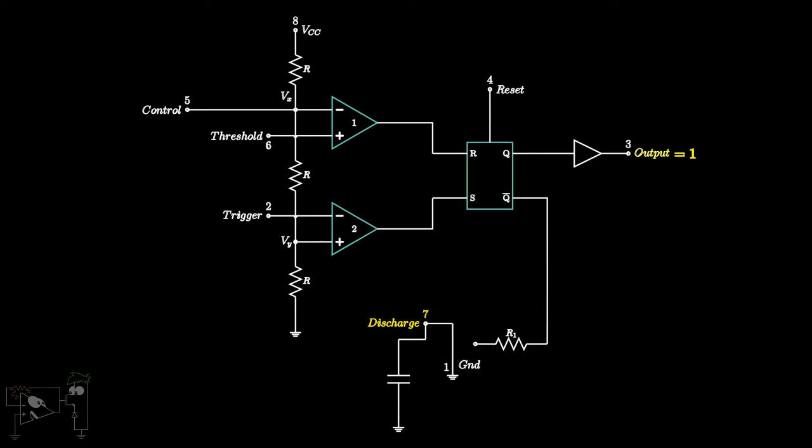On the other hand, if the output is high, Q bar will be low, meaning the base of the transistor is at low voltage. Hence, the transistor will act as an open switch and the capacitor will see a very high impedance.